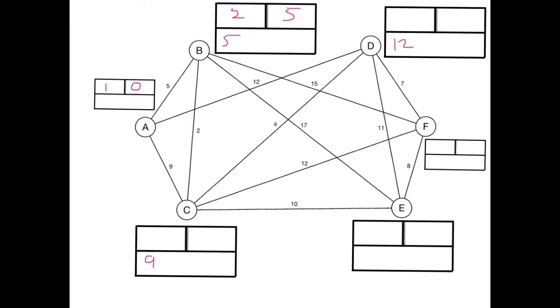We then go from B. I can get from B to C by going down this path in 5 plus 2 is 7. So that means 9 is not the best way to get to C but 7 is currently the best way of getting to C.